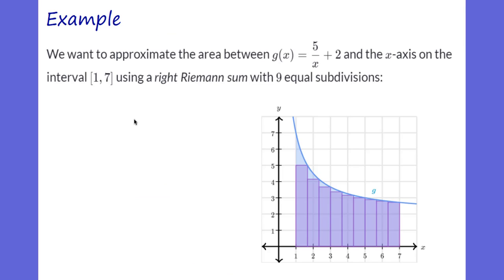Let's give an example. We want to approximate the area between g(x) = 5/(x+2) and the x-axis on the interval from 1 to 7, using 9 equal subdivisions with a right Riemann sum. We take our interval from 1 to 7, divide by 9 equal subdivisions, plug in each x value into our function to find the height, and add up all the rectangles.